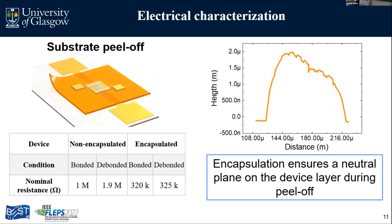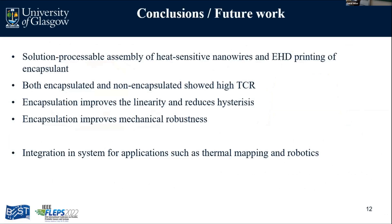We also looked at the mechanical robustness of our device, away from temperature sensing. The substrate peel-off step can be quite aggressive on our sensing layers. When we cure the spin-on polyimide, due to the difference in coefficients of thermal expansion, there is embedded stress between the glass and the polyimide. When we peel off the substrate, this stress is released on the polyimide and our electronic layer. For non-encapsulated devices, the initial nanowire resistance was around 1 MΩ and after peeling from the glass it doubled to 2 MΩ, but with encapsulation the resistance remains essentially the same.